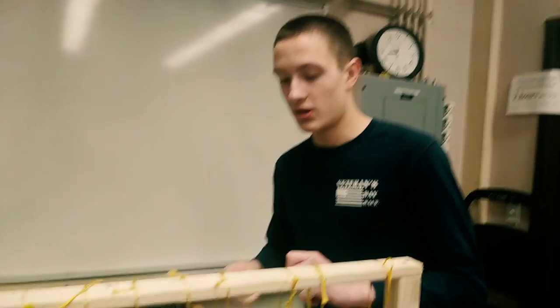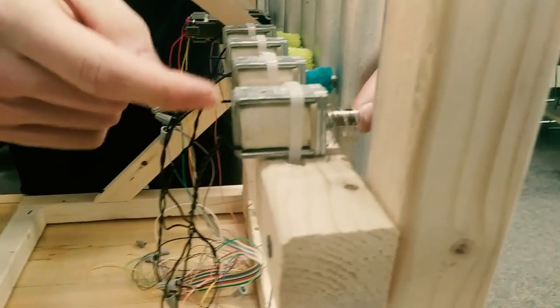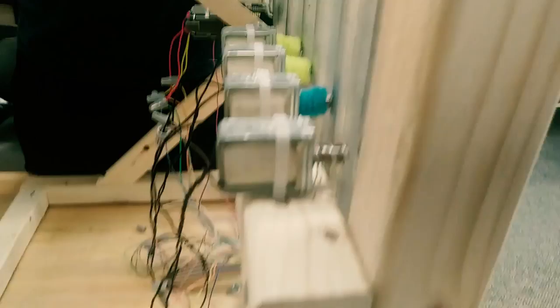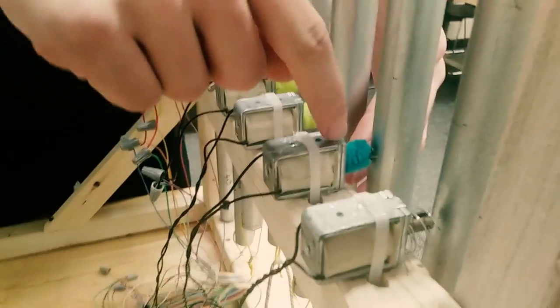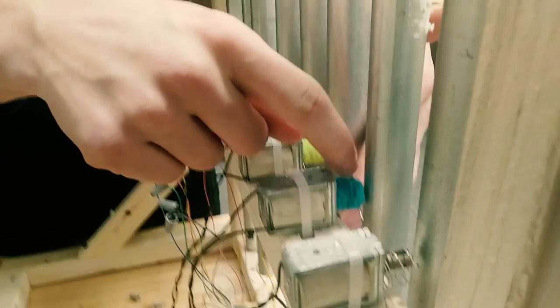As you can see here, on the solenoids we used the spring that was provided from the spring return solenoid, and then on these three we wrapped a pipe cleaner around the shaft of the solenoid with a little paper clip in here to hold it back. So when it compresses like a spring, it releases and hits the chime real nice.